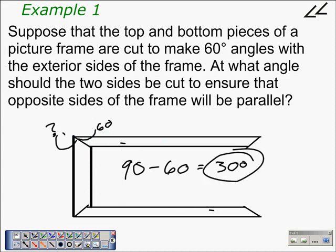So the measure or the angle of this cut right here for this shorter side needs to be made at 30 degrees to make sure both sides are parallel or both pairs of opposite sides are parallel.